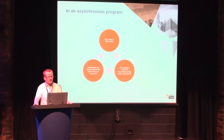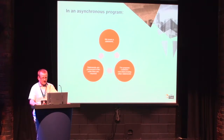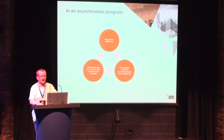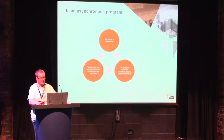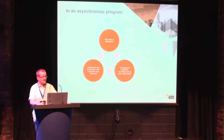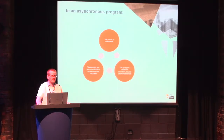In an asynchronous program, we have a more cyclical flow. Starting from the same point as the synchronous program by executing a statement, while the program is waiting for the results of that statement, it can continue and execute other statements — so it's not being blocked. The program then processes the results of these statements as soon as they become available. The effect is we only need to wait for as long as the slowest running statement, and the program continues until all results and events have been returned and processed.